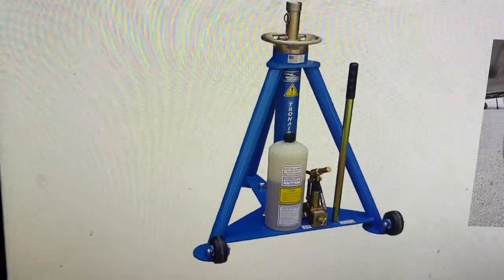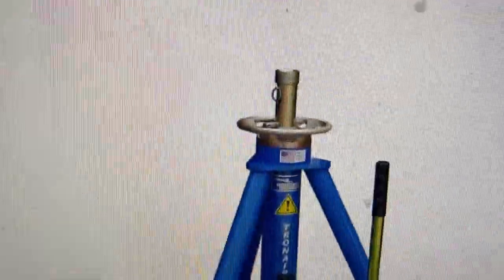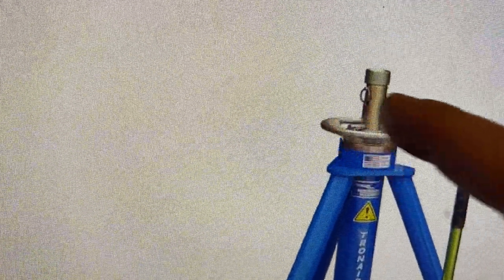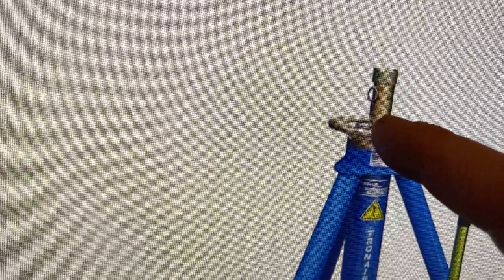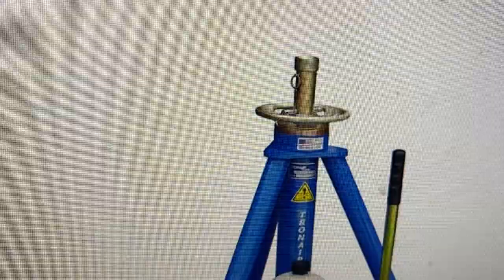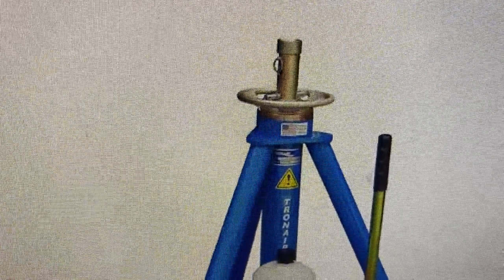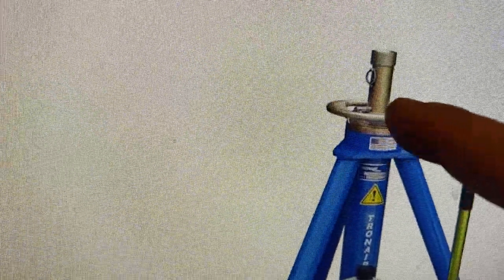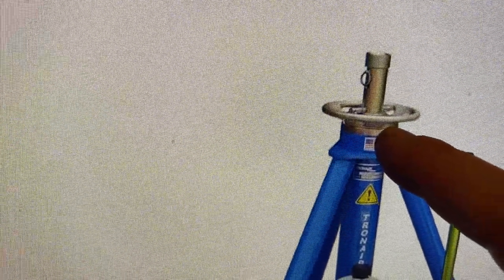But one thing I want you to know about is something called a safety collar. This thing right here, as this jack comes up, you always want to rotate that safety collar and keep it down. Because what ends up happening is if this jack ever fails or something goes wrong with the jack and it loses its pressure all of a sudden, it won't be able to come down if the safety collar is all the way down.